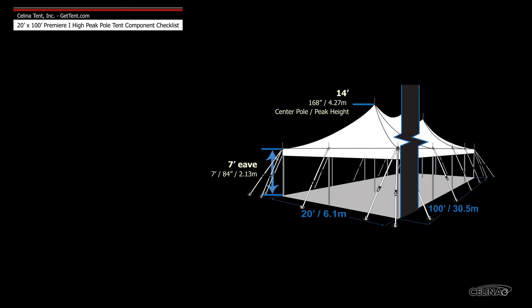Poles for tents with a 7 foot eave height include 9 14 foot center poles and 24 7 foot side poles.